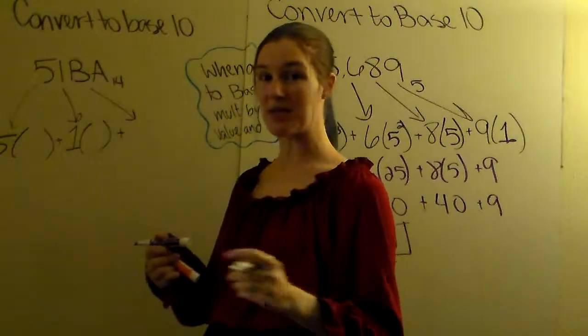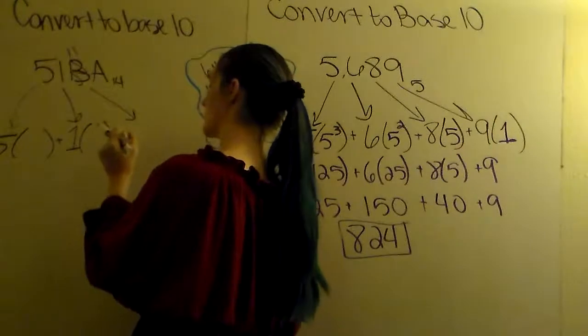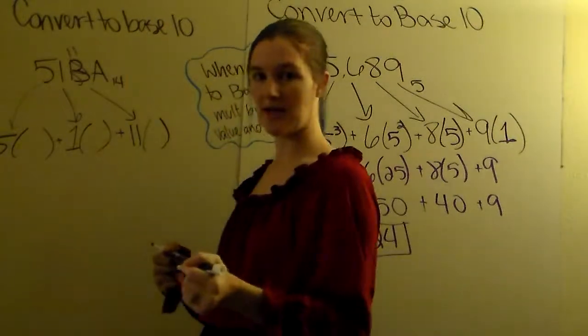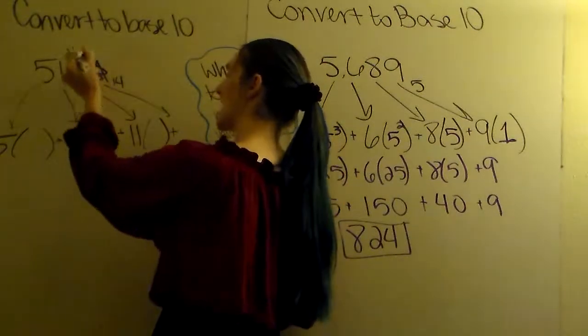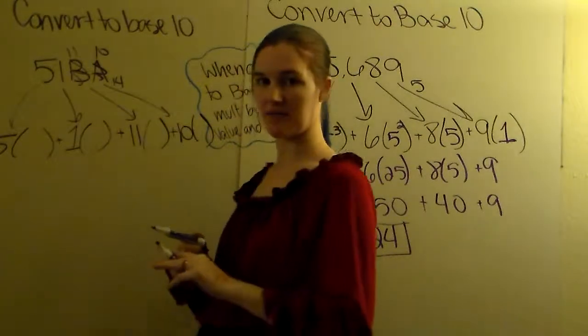Well, B is not really B. B would be if A is 10, B would be 11. So we're going to do 11 times its place value. And then A, A is not A, A is 10 times its place value.